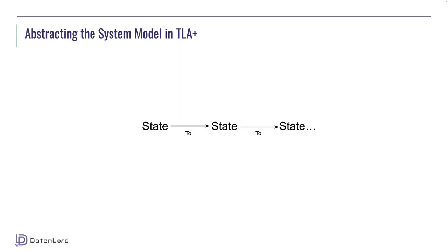We use TLA+ to check all possible states using given invariants and properties. How can we abstract a program in TLA+? A normal program is a sequence of instructions that tells the computer how to perform a specific task. A TLA+ model is a mathematical description that tells the human or the tool what are the possible behaviors or properties of a system. In TLA+ we are not writing a series of procedures — we are writing how the program changes from one state to another state.